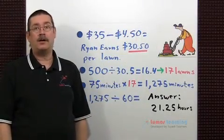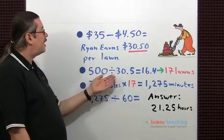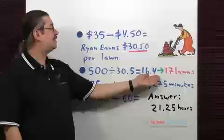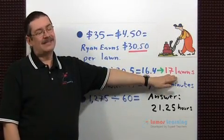Now let's find out how many lawns he needs to cut. He wants to make a profit of $500. So just divide that number by 30.5, you get 16.4. Let's go ahead and round this to the nearest whole number to find out the number of lawns: 17.